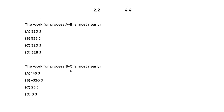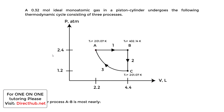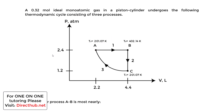We're looking at a pressure versus volume diagram — pressure in ATM, volume in liters, a PV diagram. We start at A, where we have a temperature of 201.07 Kelvin, a specific pressure of 2.4 ATM, and a specific volume of 2.2 liters.